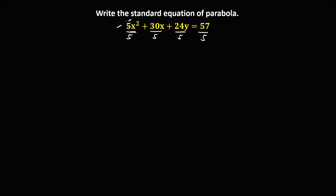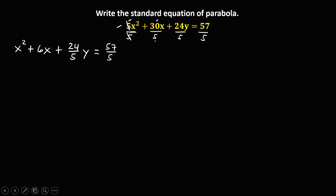Then we can cancel. So we have now x squared, then plus 30 divided by 5, which is 6x, then plus 24 divided by 5 — so just copy, 24 over 5 — then y, then equals 57 divided by 5, so 57 over 5. This is now our new equation.